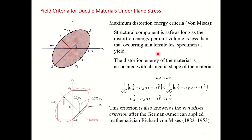The distortion energy is the energy associated with a change in the shape of the material. If the element is under shear stress, there will be angular deformations that result in a change in shape. How distortion energy is derived will be discussed in the energy chapter when we cover impact loading.